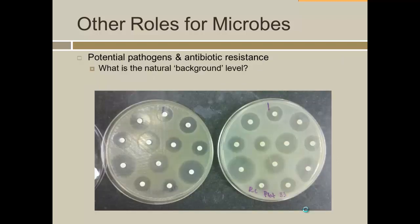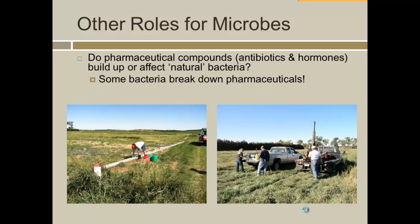Other roles you'll hear about involve looking at pathogens and antibiotic resistance. We grow bacteria on a plate, and each little white disc has some antibiotic in it — you can tell by how big the clear field is how susceptible the bacteria is to that antibiotic. This is one way we can isolate and study bacteria from manures and manure-impacted environments. Pharmaceuticals are also a big issue — we did a study looking at vegetative treatment areas to see whether pharmaceutical compounds are building up or going away. There are helpful bacteria that will break down these compounds.